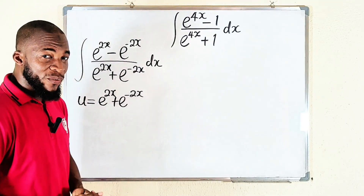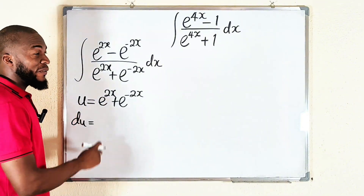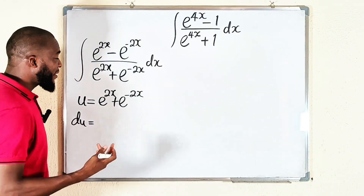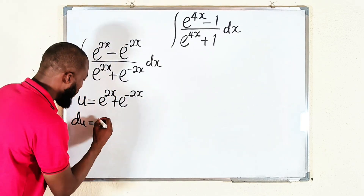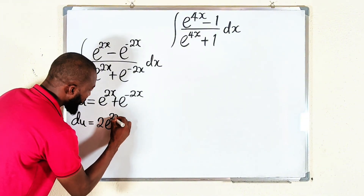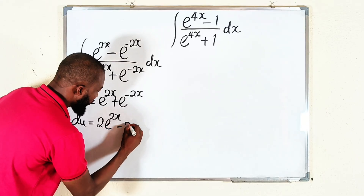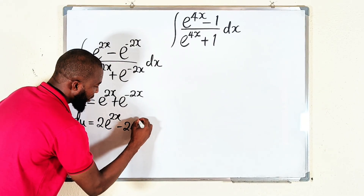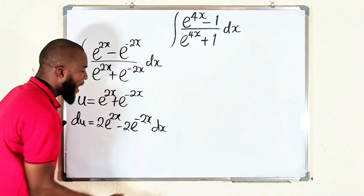Now we are going to differentiate both sides. The derivative of e^(2x) is still e^(2x) times the derivative of the exponent. The derivative of 2x is 2, so we have 2e^(2x). The derivative of e^(-2x) gives us negative 2 times e^(-2x) dx.